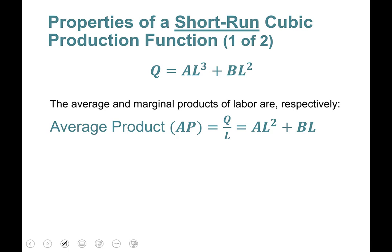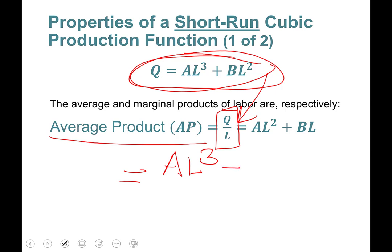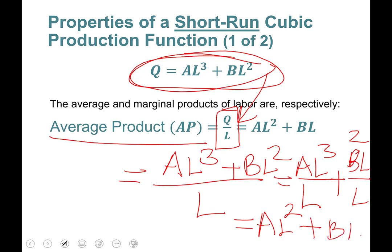Now let's derive average product. Average product of labor is simply Q divided by L. Taking Q = AL³ + BL² and dividing by L gives: AP = AL² + BL. That is all there is to it — just divide the production function by L to obtain the average product.